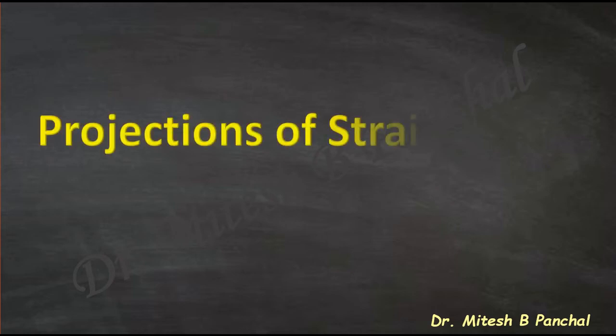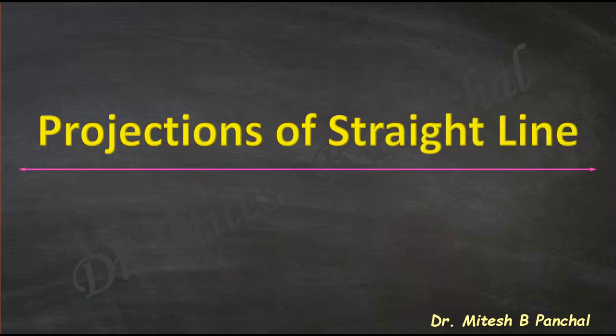Dear students, in this session we will start the topic that is Projections of a Straight Line. We will introduce what Projections of a Straight Line are and how these projections are obtained. We will also see the different orientations of a straight line with respect to the Basic Principal Planes, those are HP and VP. The prerequisite for Projections of a Straight Line is the Projections of a Point.